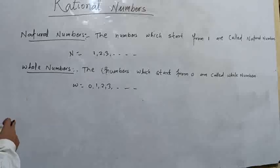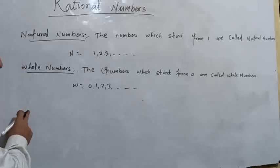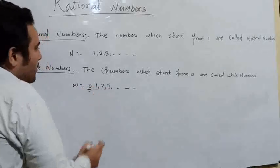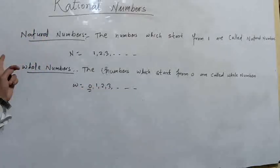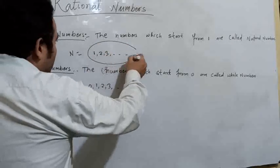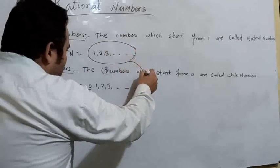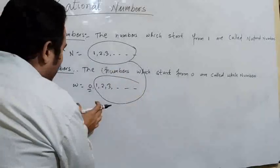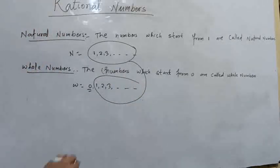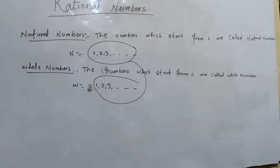We will study the difference between natural numbers and whole numbers. We will find only 0. Zero is the only difference between natural numbers and whole numbers. All natural numbers are whole numbers, but all whole numbers are not natural numbers. The reason is only 0.